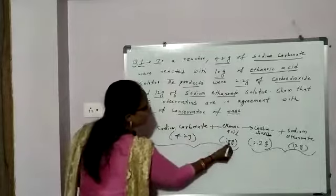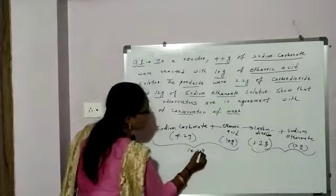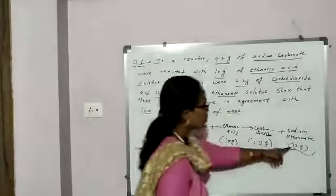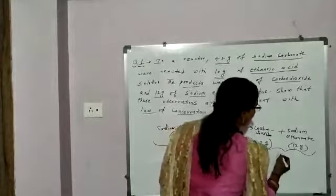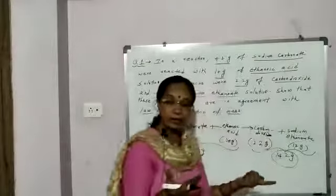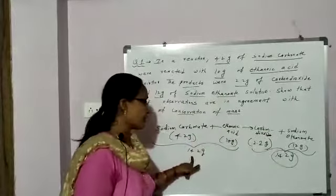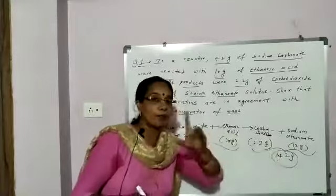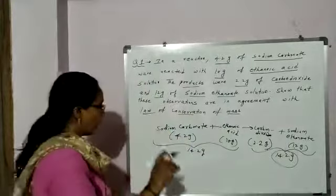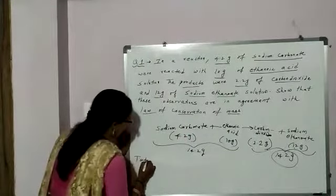So: 10 plus 4.2 equals 14.2 grams — this is the total mass of reactants. Then 12 plus 2.2 equals 14.2 grams — this is the mass of products. We observe that the total mass of reactants is equal to the total mass of products. Now let's write the steps formally. Total mass of reactants: